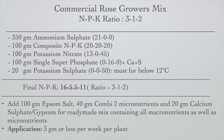To this ratio, you can add 100 grams of Epsom salt, 40 grams of Combi-2 micronutrients, and 20 grams of calcium sulfate or gypsum. The additional calcium available in gypsum and single superphosphate will balance the pH if it goes below a certain limit. Because the sulfate combination is high here, calcium is added to balance the pH.